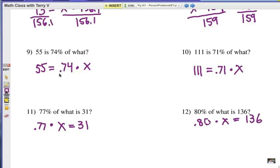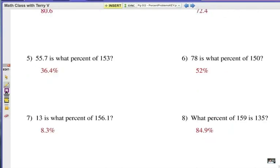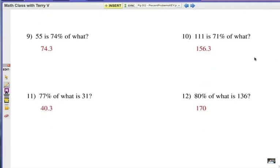You're going to divide both sides by .74. Divide both sides by .71. Divide both sides here by .77. And divide both sides here by .8 or .80. Alright, final check of the answers. How did you do? Take a look.